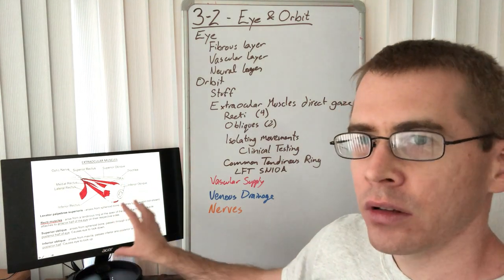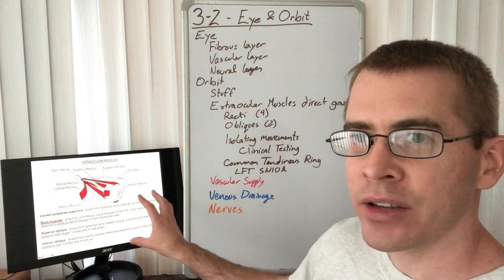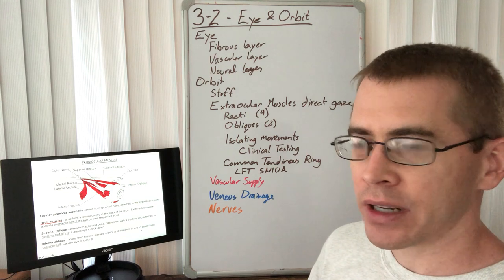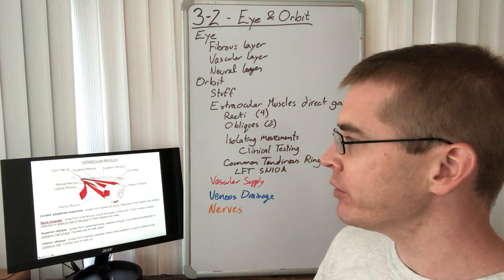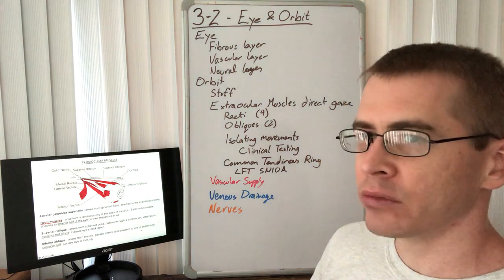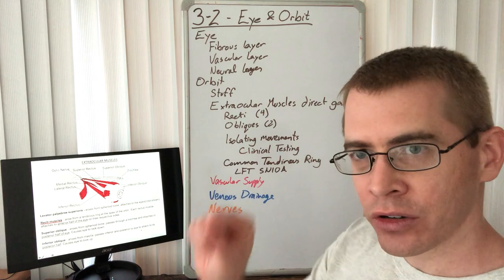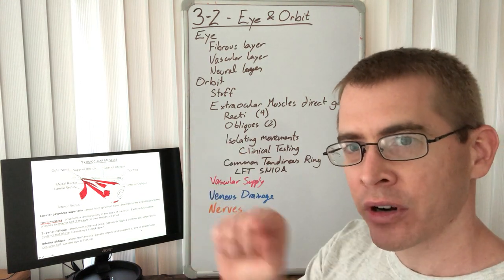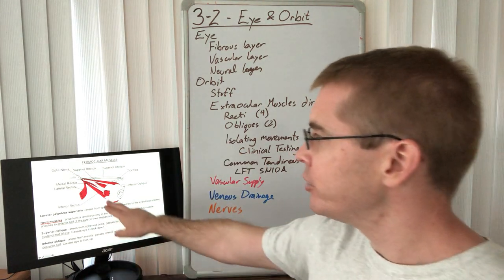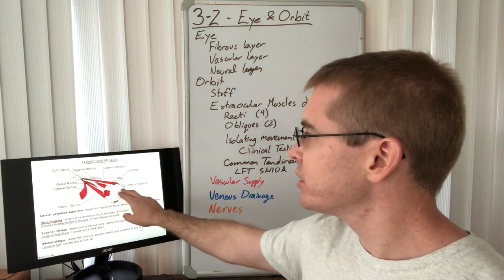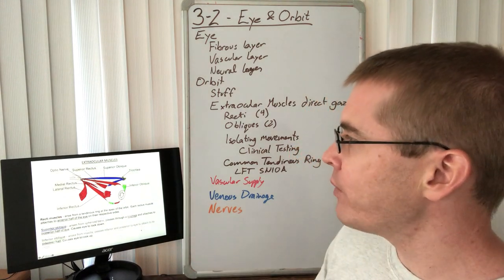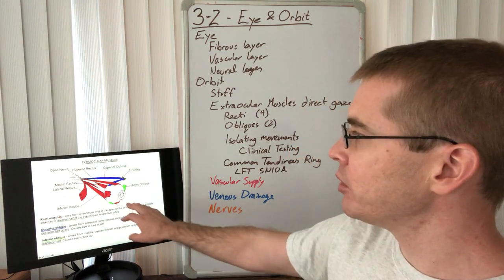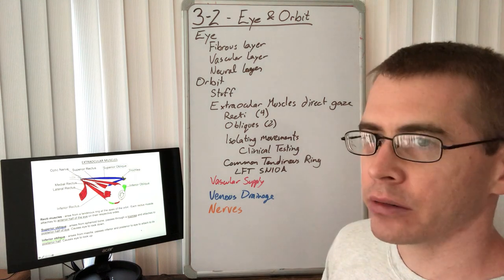The gaze-directing muscles that attach to the eye include four recti muscles in the cardinal coordinates — superior, inferior, medial, and lateral — all attaching to the eye. There are also oblique muscles: the superior oblique originates in the posterior orbit, travels anteriorly along the medial orbit, and hooks through the trochlea, a connective tissue hook on the medial superior orbit, before attaching superiorly on the eye.